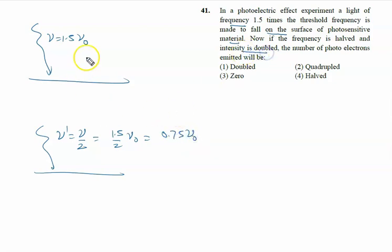And intensity is doubled. Initial intensity is i1 equal to i, or new intensity, that is i2, equal to 2i.